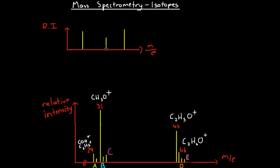Say we're using a hydrocarbon. If we assume that all of our carbons were carbon-12 and all of our hydrogens were hydrogen-1, then we're going to get a set of major peaks caused by the different fragments. Each of these peaks is going to be caused by a different possible fragment that can be produced from the hydrocarbon molecule that we started with.